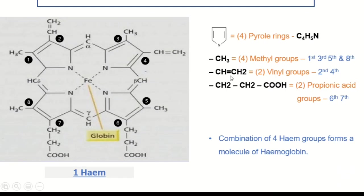The third component is the vinyl group. There are two vinyl groups in one heme molecule, at the second and fourth positions. At the second position there is CH=CH₂ (vinyl group), and at the fourth position there is also a vinyl group CH=CH₂.